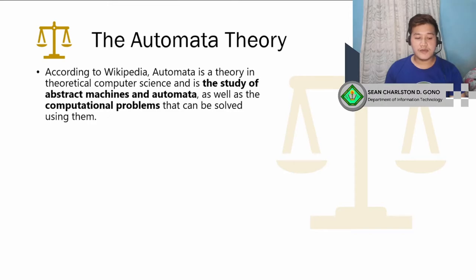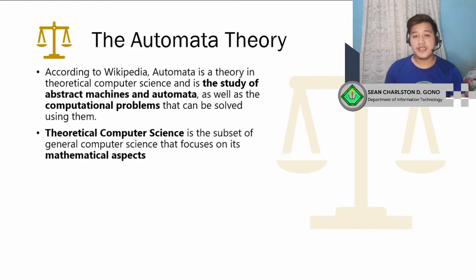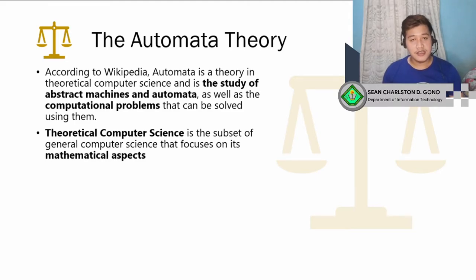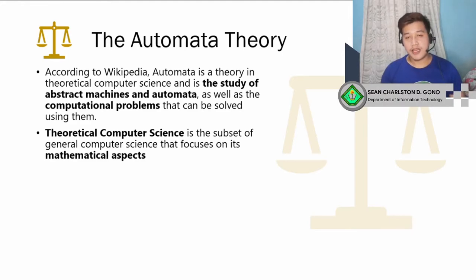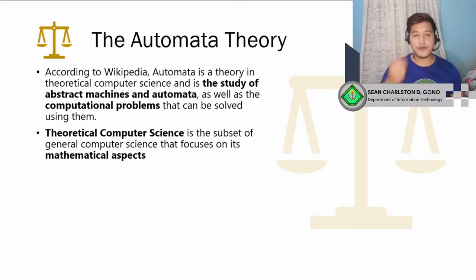So what is theoretical computer science? Theoretical computer science is the subject in general computer science that focuses on its mathematical aspects. We're not going to talk about code or design preferences, but about mathematical aspects — the formulas, equations, and functions inside our computer that do things for us. That is theoretical computer science.